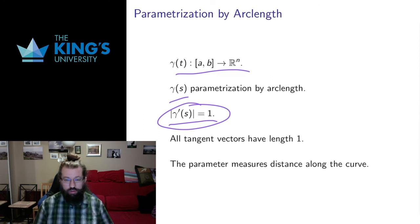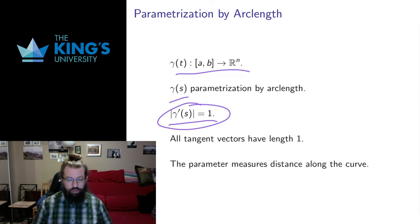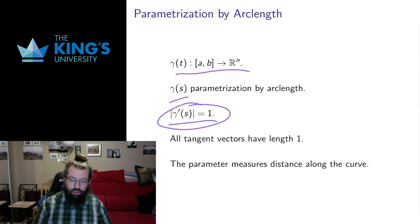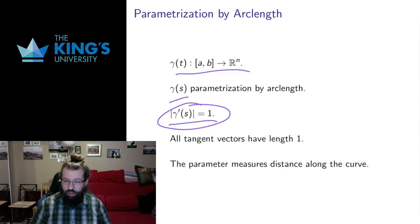We're going to make use of this in future videos. For a lot of the definitions that we make in the calculus of parametric curves, we're going to make the definitions first in the arc length parameterization, because it's the special unique parameterization we can define for each curve. Then we'll move from the arc length parameterization into how to express them in any other kind of parameterization. This is a really common and standard technique that starts in parametric curves and extends throughout the whole rest of calculus and differential geometry beyond that.